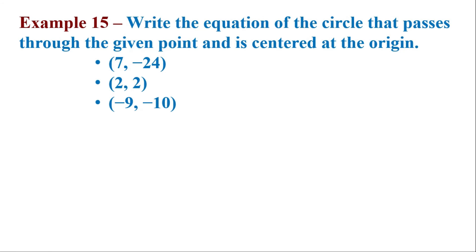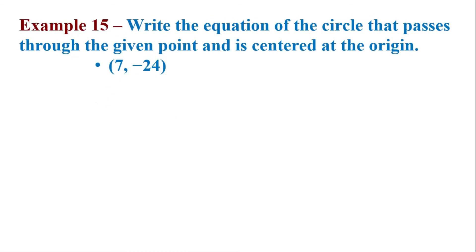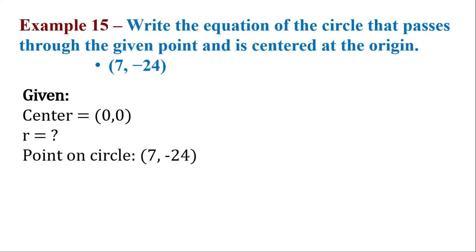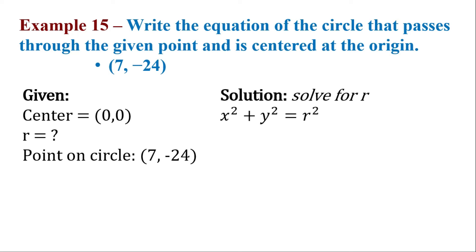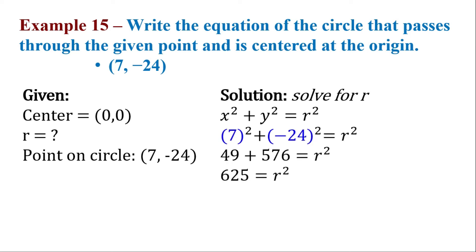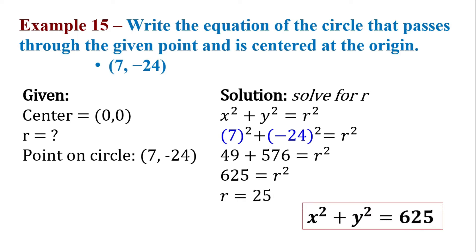Now for our last examples in this video, let's write the equation of the circle that passes through a given point with center at the origin. The circle should pass through 7 comma negative 24. Let's solve for r by substituting 7 and 24 into x and y. That gives us 625 for r squared, so r is equal to 25. Now we have our equation of the circle.